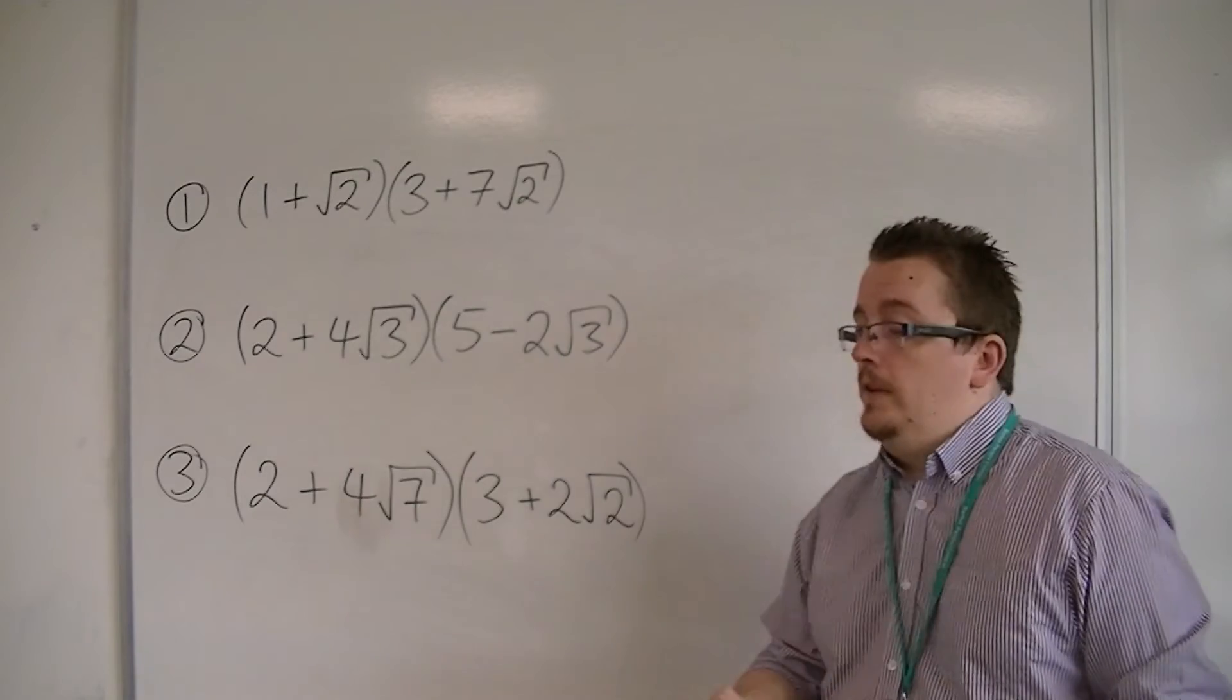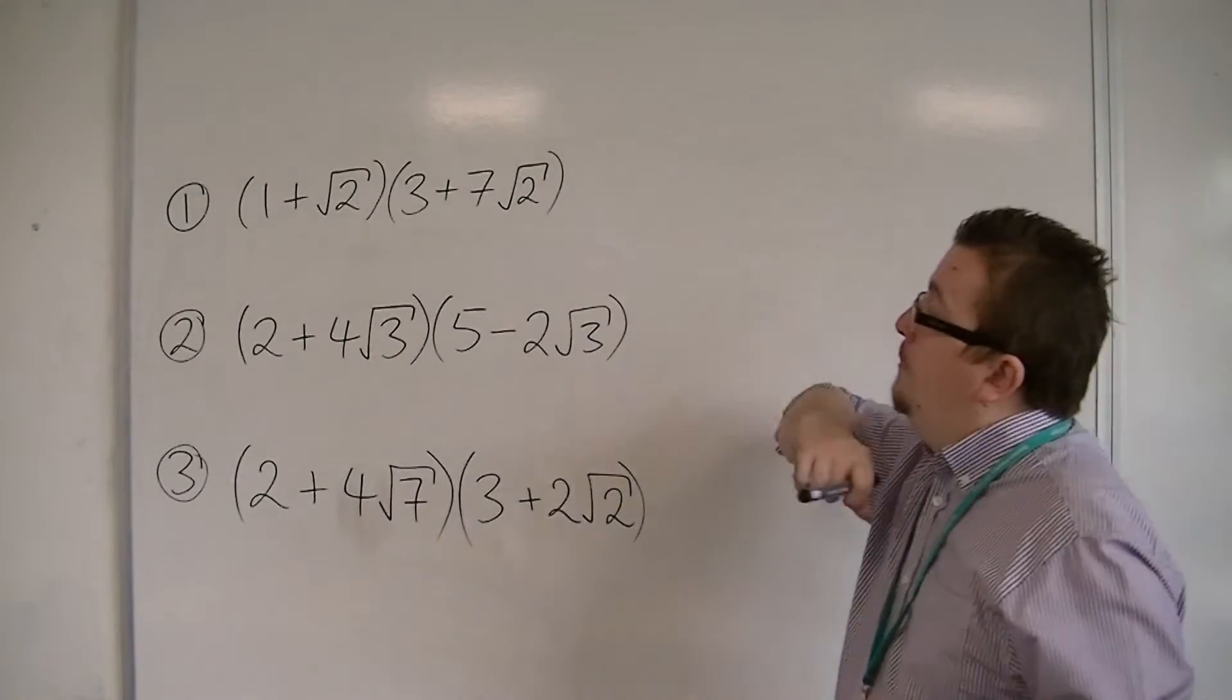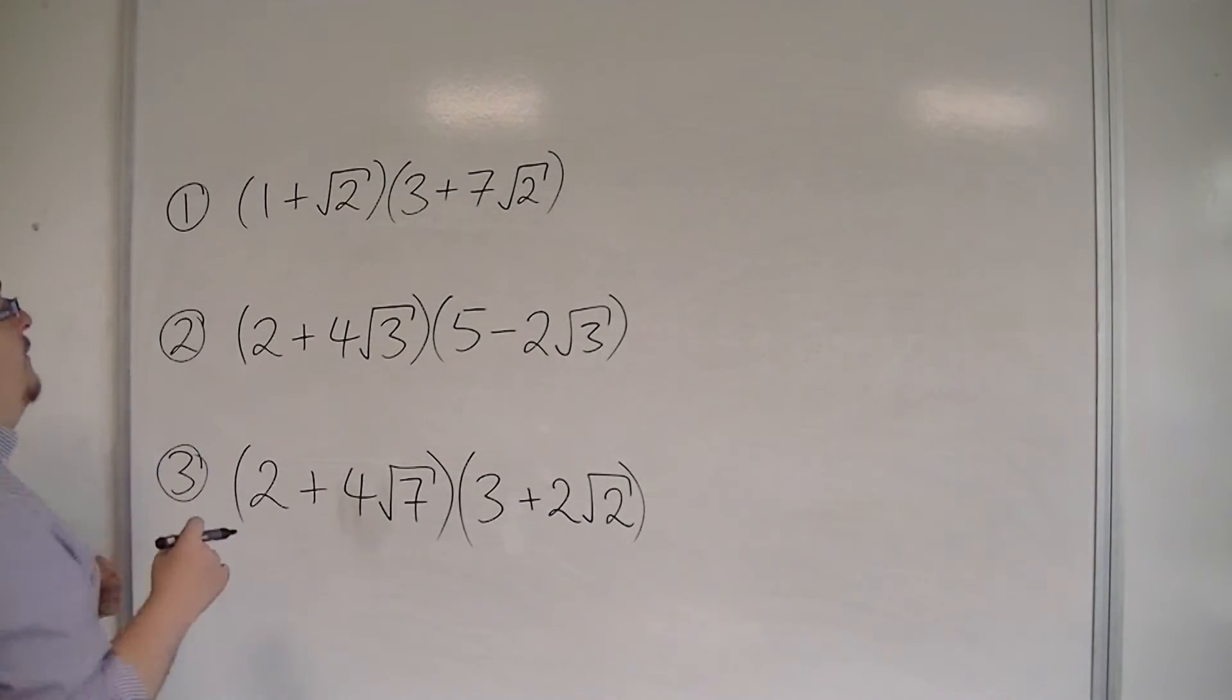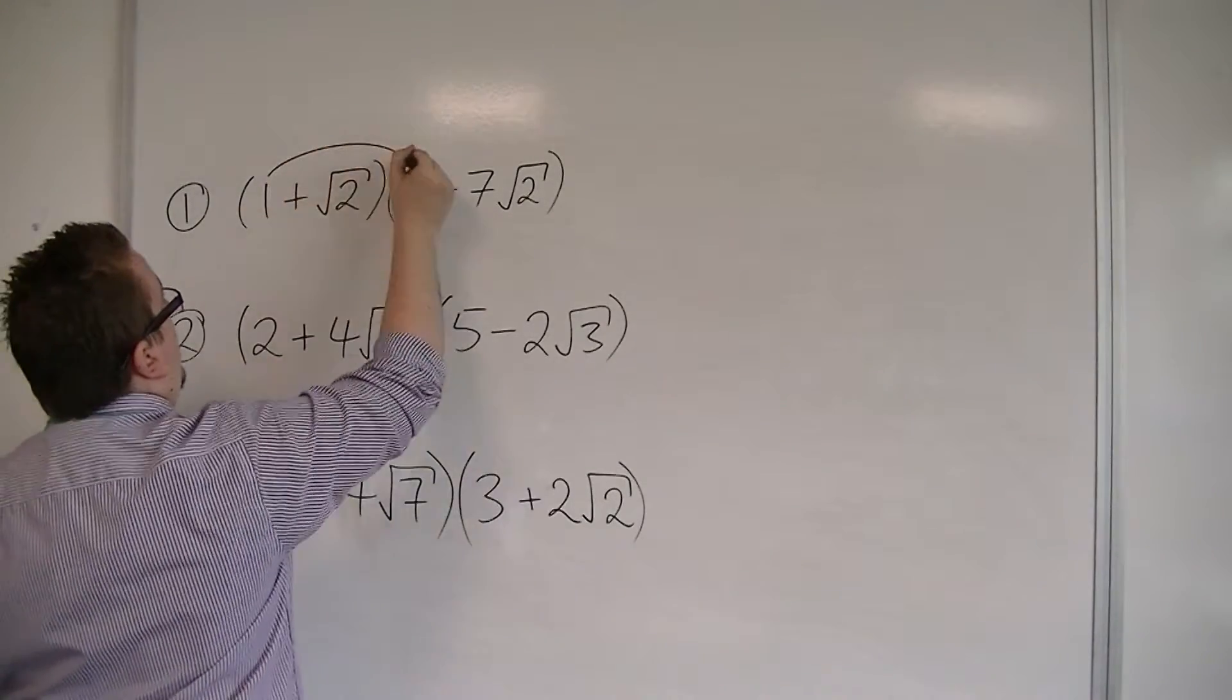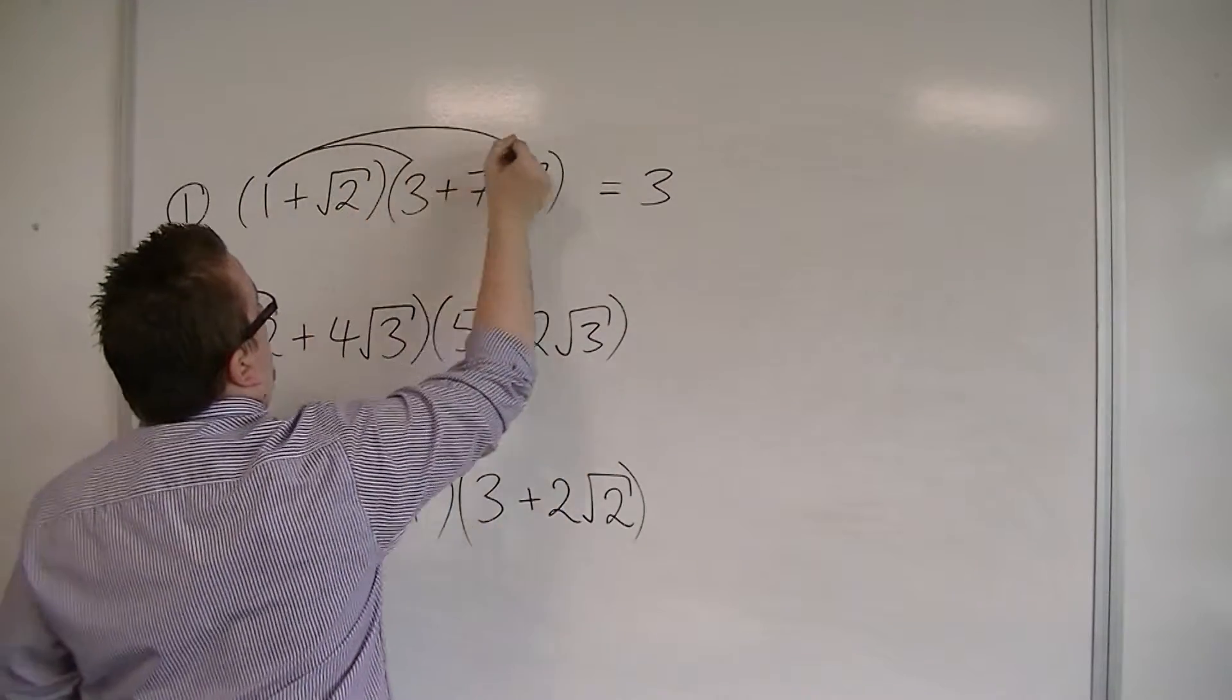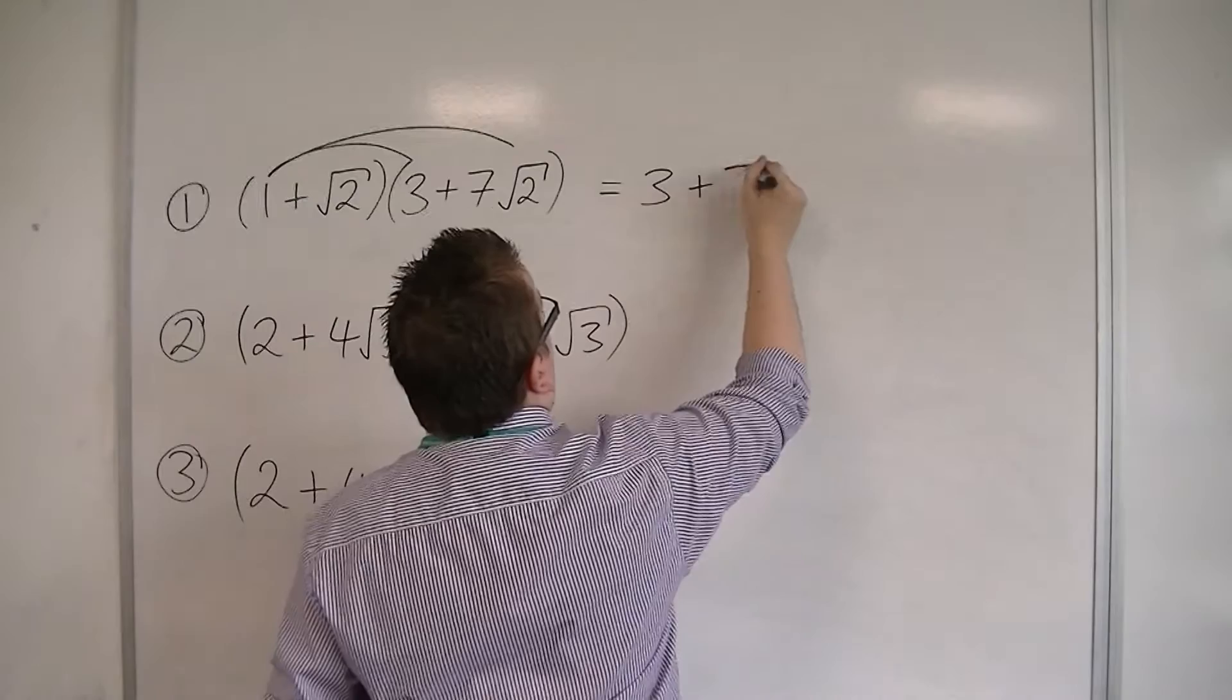So let's go with number 1 first: (1 + √2)(3 + 7√2). I'm going to do it in stages. I'm going to do 1 times 3 first, so that would be 3. Then I'm going to do 1 times 7√2, so that's 7√2.